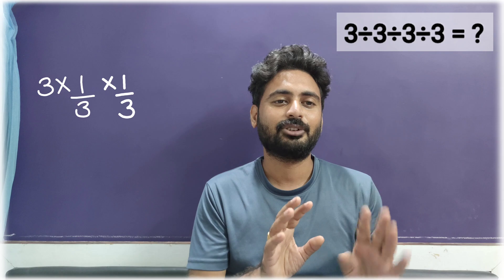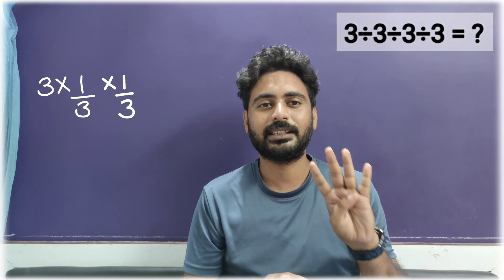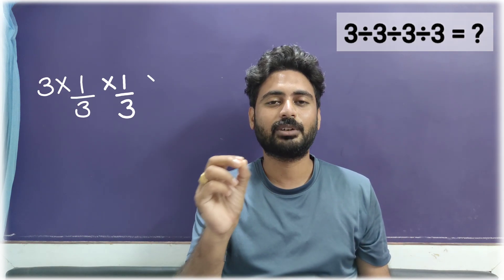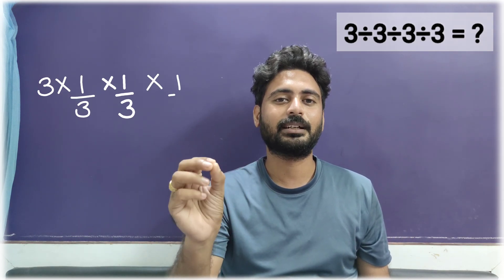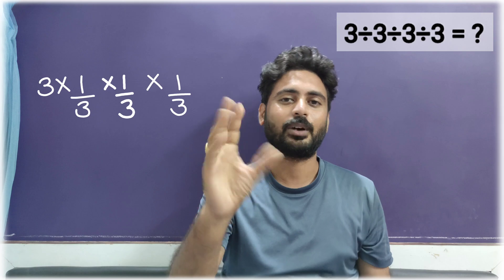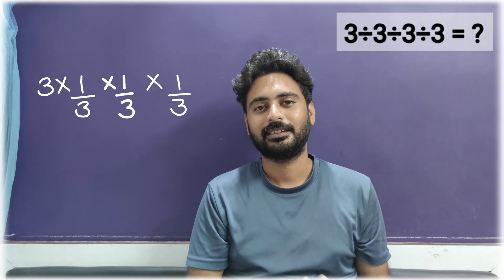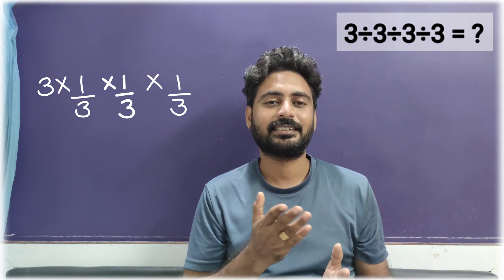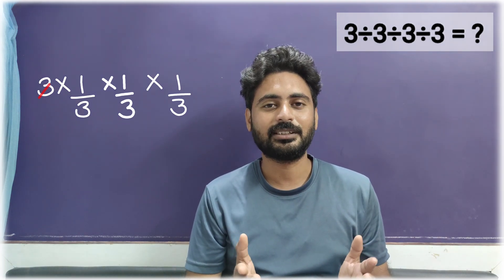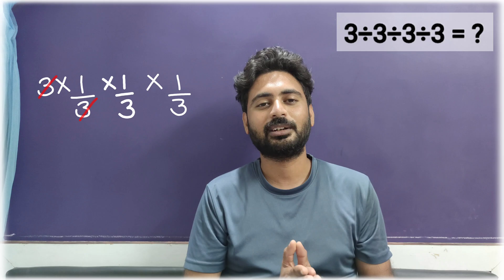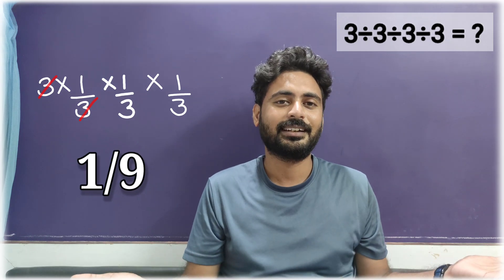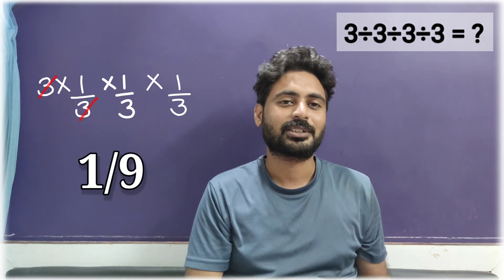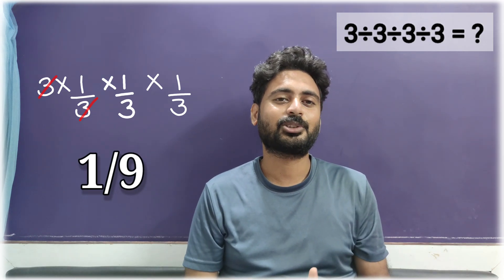Again, if you have four 3's, you can write 3 times 1/3 times 1/3 times 1/3. Now, the 3 and one of the 3's in the denominator cancel out, and you're left with 1/9. Quite a simple thing, right?